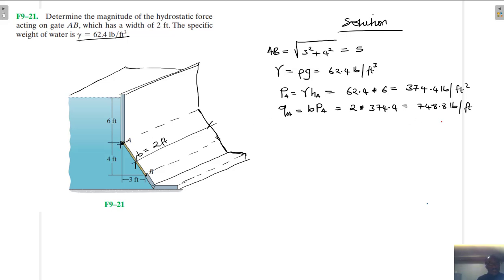All right, so we found that. So if I was to draw this, I'll draw it later on. Then let's find my PB. PB is going to be equal to gamma times hB. This is going to be equal to 62.4 times what's hB. The height hB is 4 plus 6, this day. Therefore this is going to be equal to 624 pounds per square feet. And qB is going to be equal to b times PB, so it's 2 times 624. So this one is equal to 1248 pounds per feet.